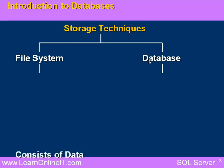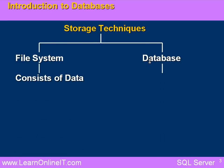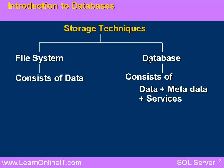One major difference: in case of a file system, we are only storing data — file system consists of data only. Whereas a database consists of data, metadata, and services. These services are nothing but programs like stored procedures, triggers, functions, etc., and they provide very large advantages for our databases.